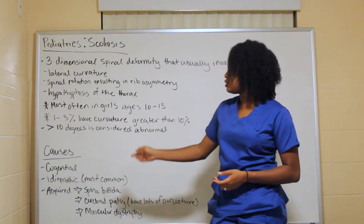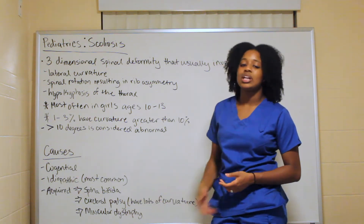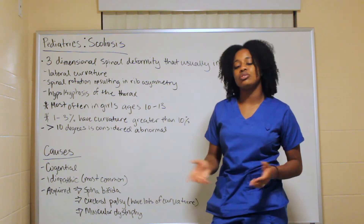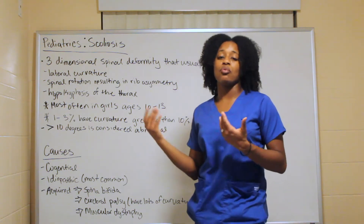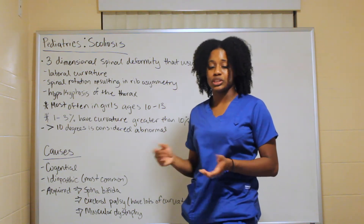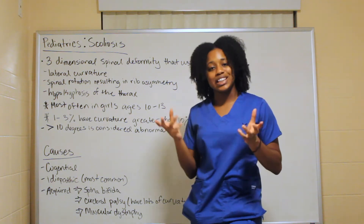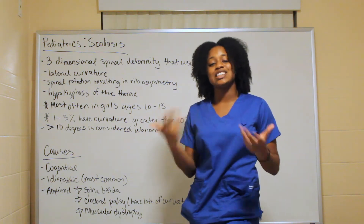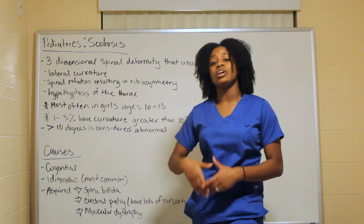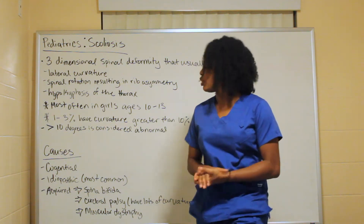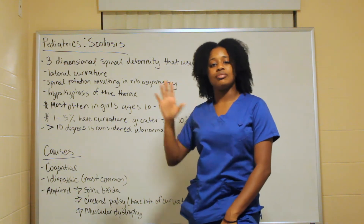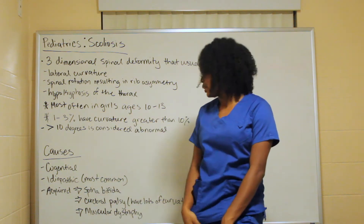As far as causes, it could be congenital — carrying through genetics. The most common cause is idiopathic, which just means unknown; there's no identifiable reason for why it occurred. You can think of 'idiopathic' as the pathology being unknown, and that is the most common cause of scoliosis.